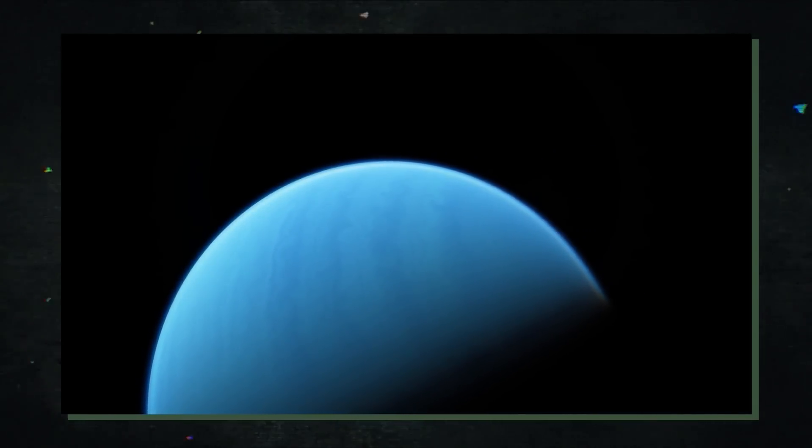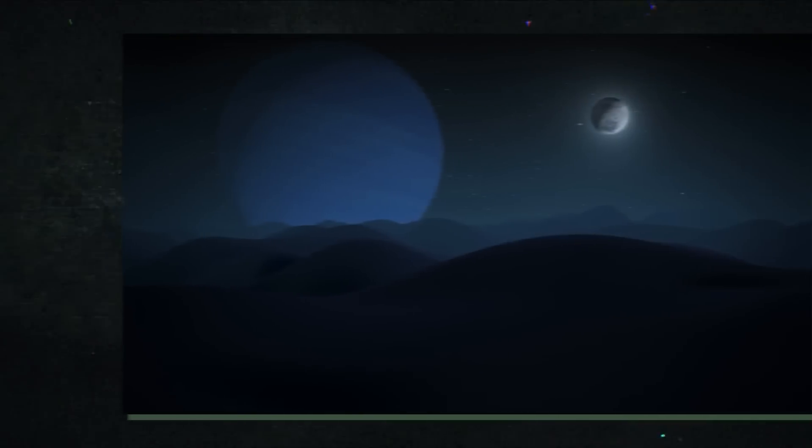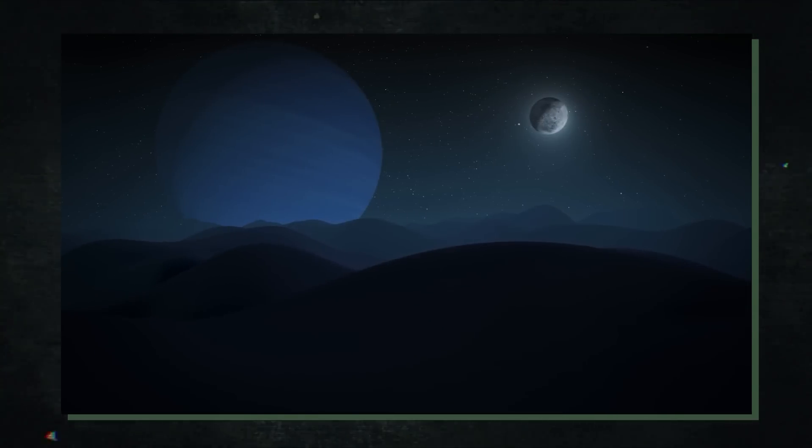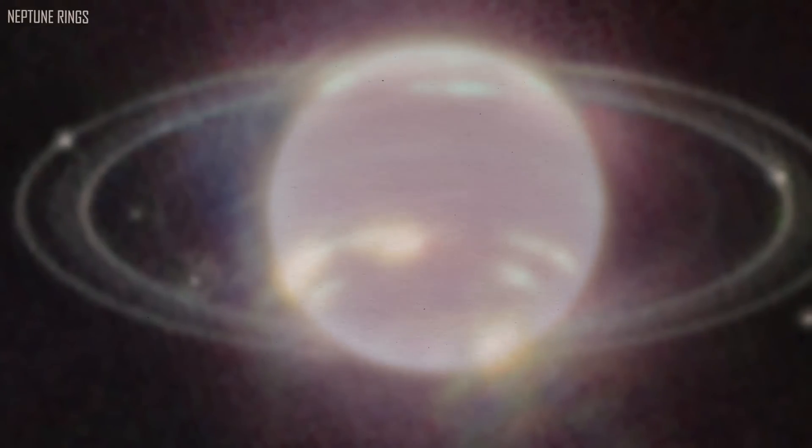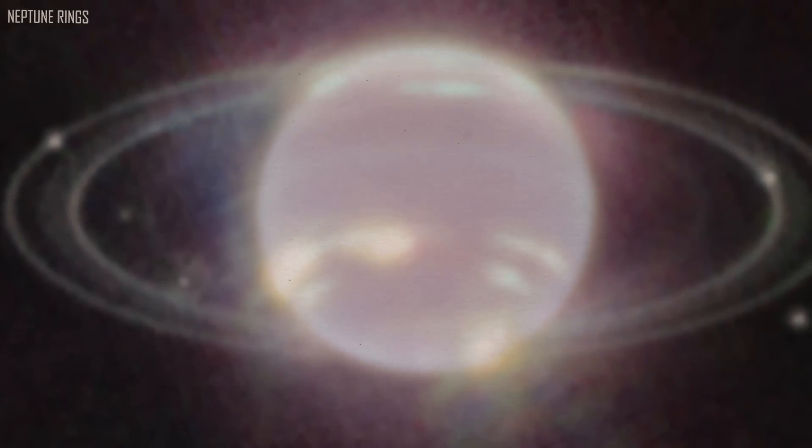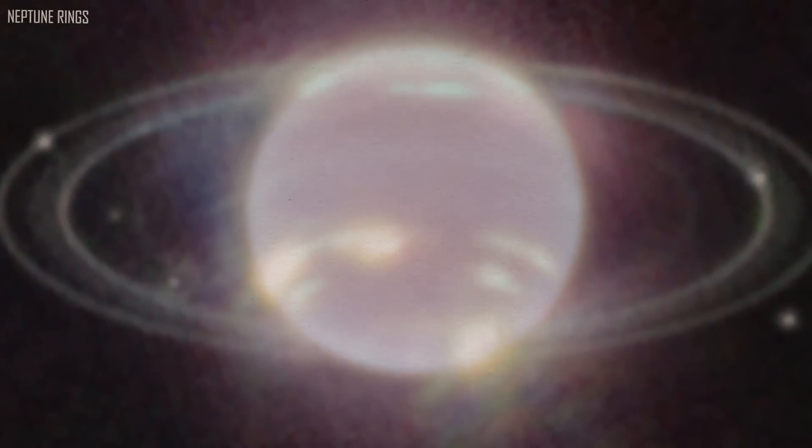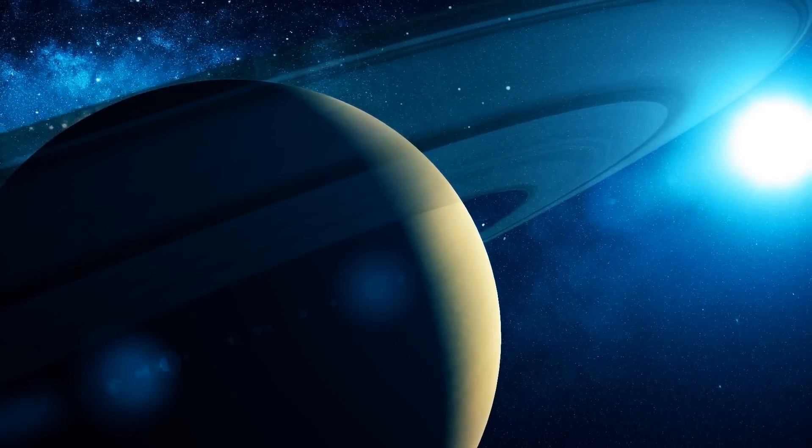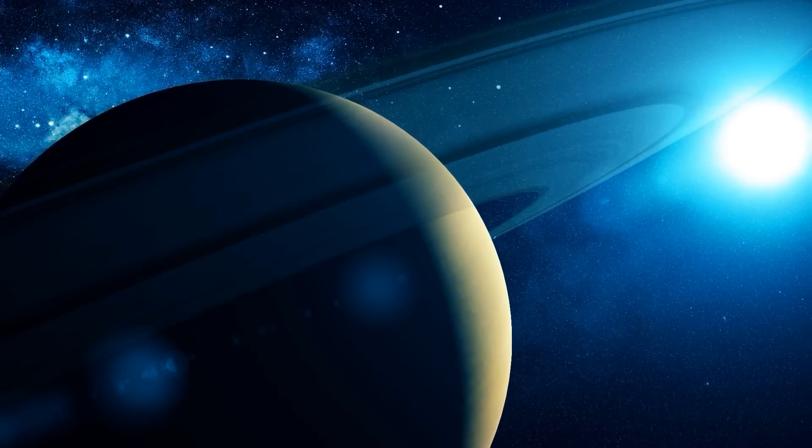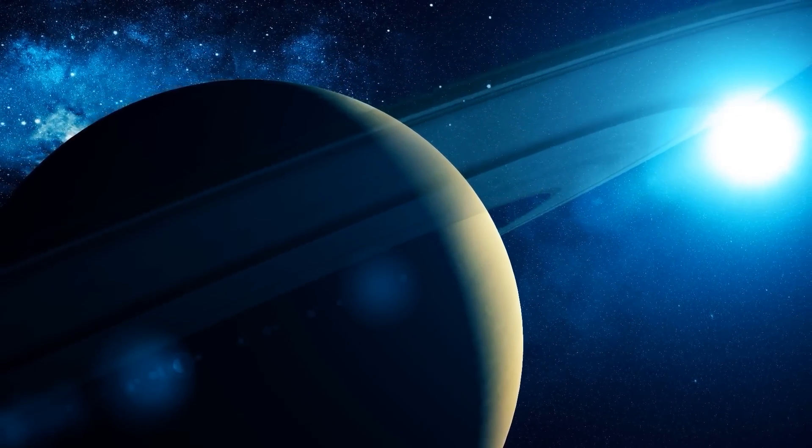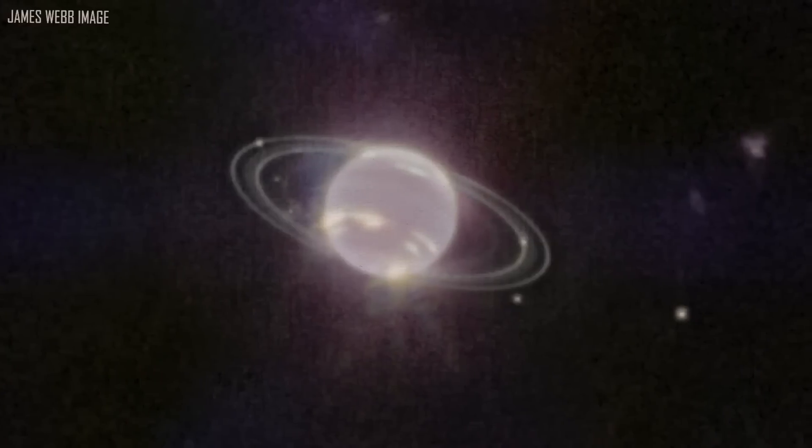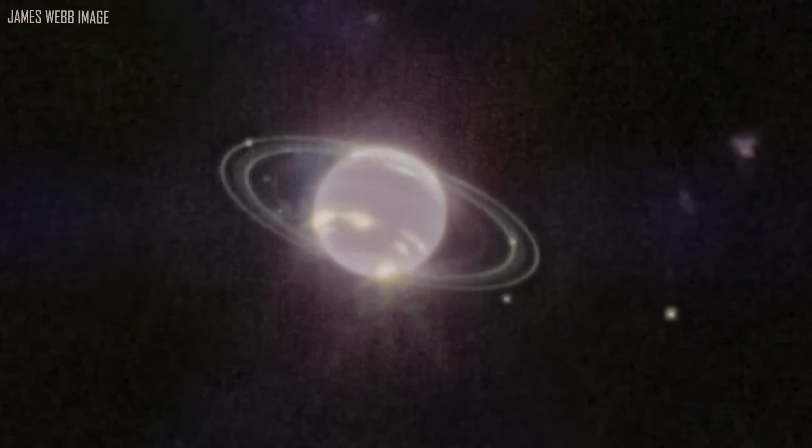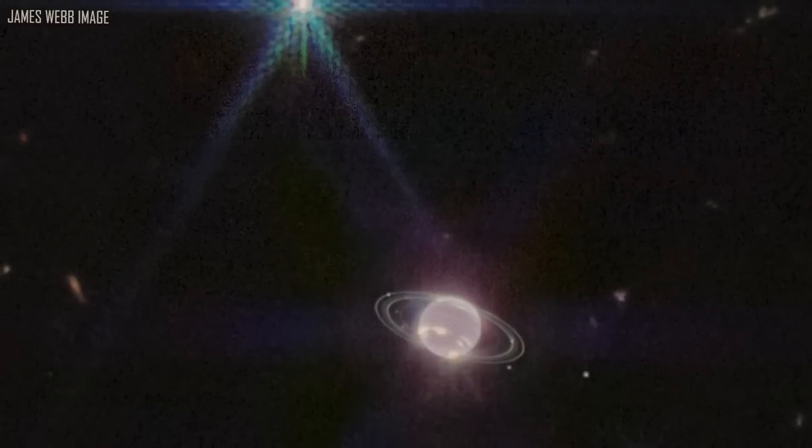The names of the rings are tributes to the astronomers who made significant contributions to our knowledge of the planet. Therefore, the rings are referred to as Gal, Le Verrier, Lassell, Arago, and Adams as they move away from the planet. Additionally, there is another unidentified ring whose orbit nearly matches that of Galatea, one of Neptune's moons. These rings may be quite fleeting and are believed to be a relatively recent addition to the planet, according to astronomers.